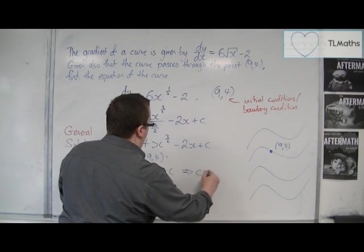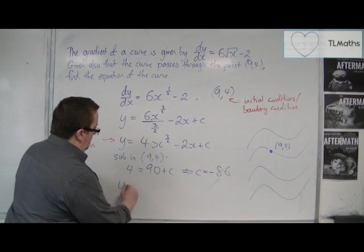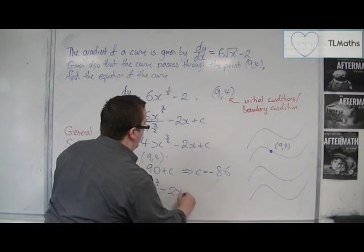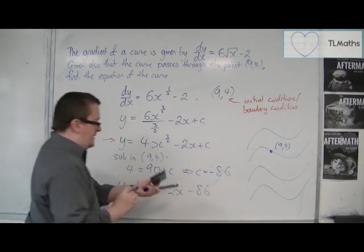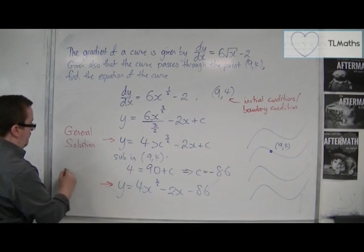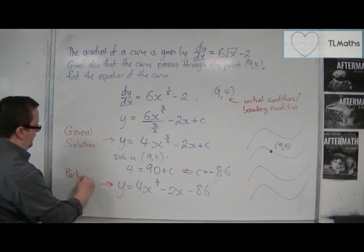And so c must be -86. And so y = 4x^(3/2) - 2x - 86 is the equation of that particular curve. And that is why we refer to it as the particular solution.